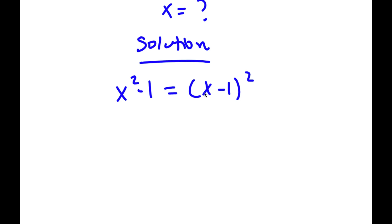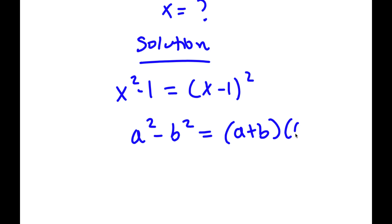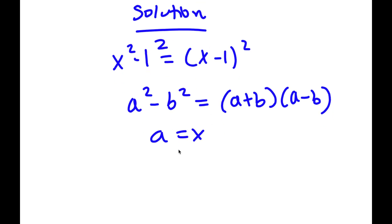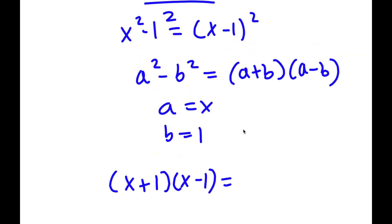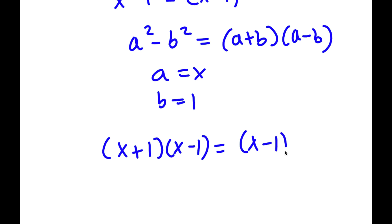I'm going to expand x squared minus 1. If I have something in the form a squared minus b squared, this equals a plus b times a minus b. In this case, x squared minus 1 — since 1 is the same as 1 squared — a equals x and b equals 1. So now I have x plus 1 times x minus 1, which is equal to x minus 1 squared.